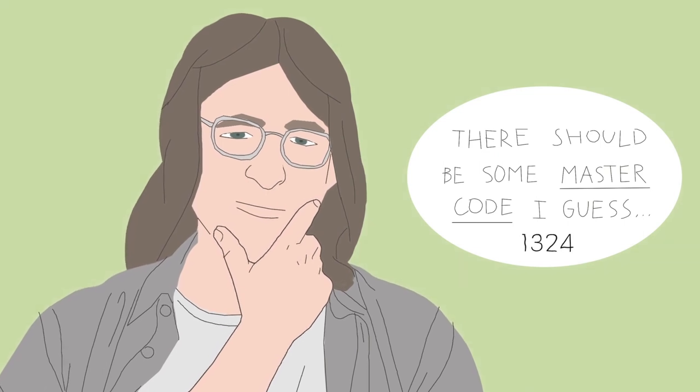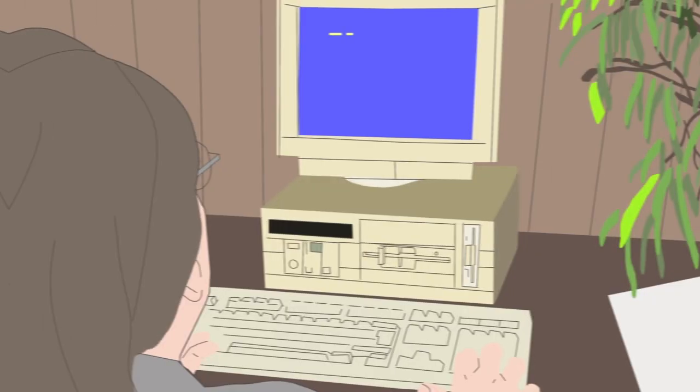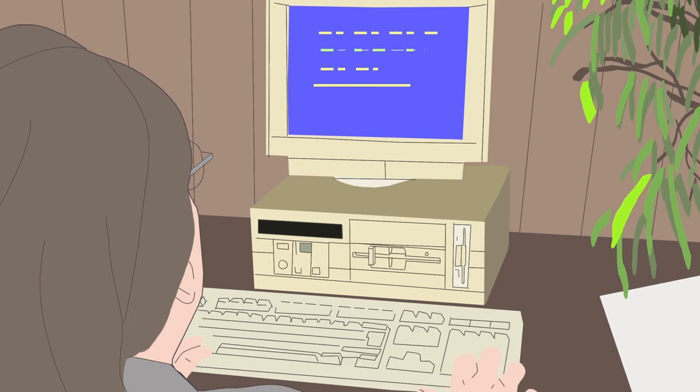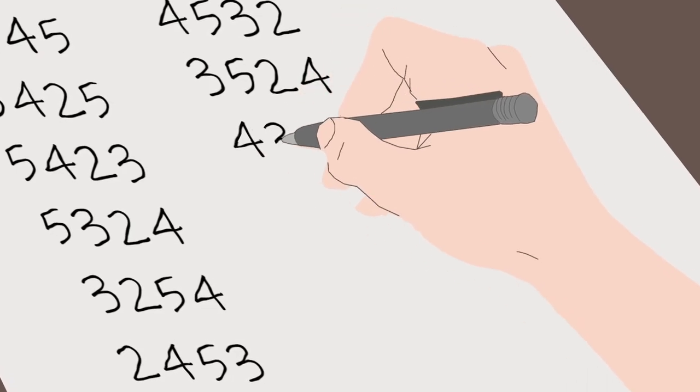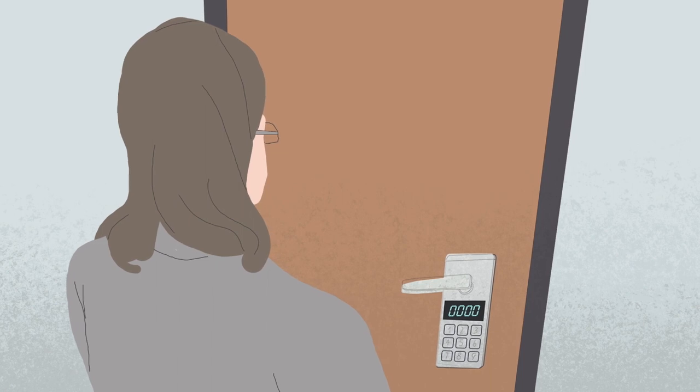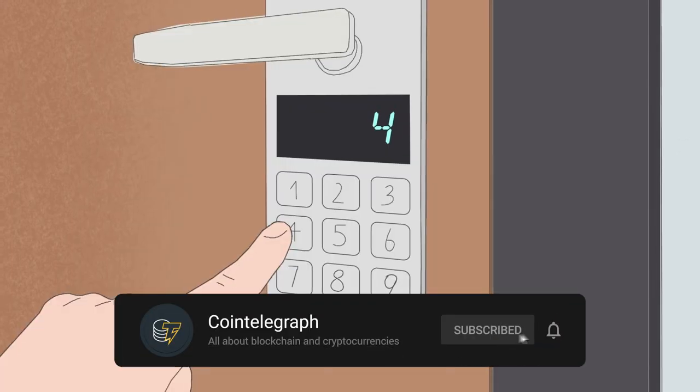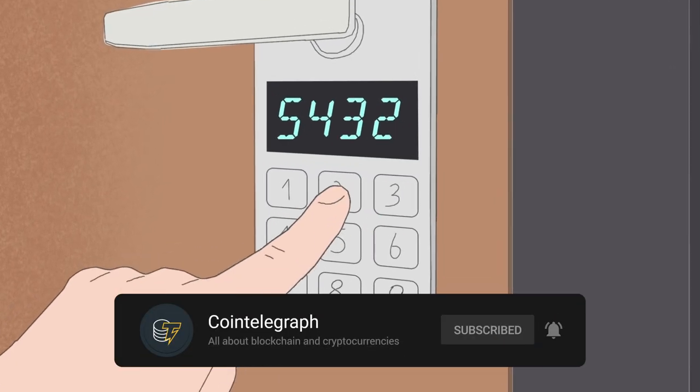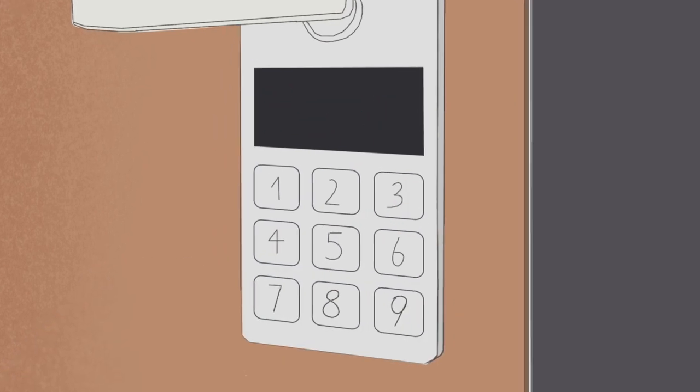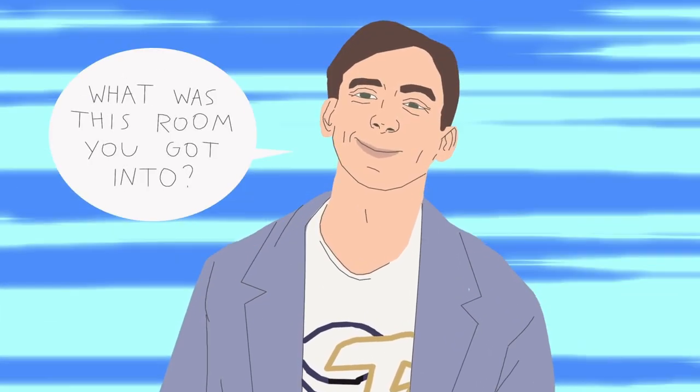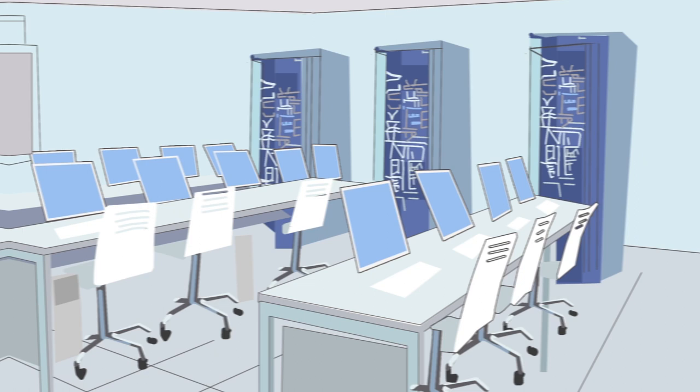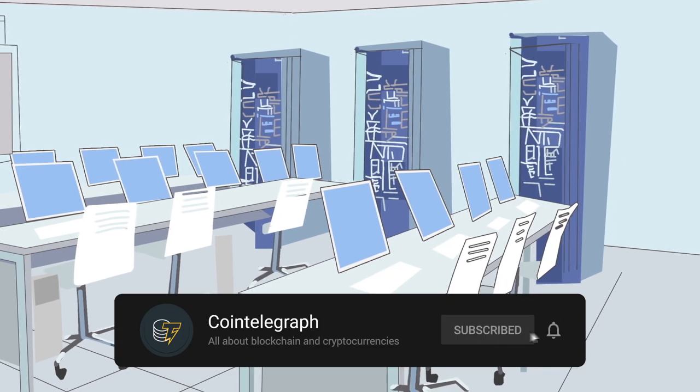It occurred to me there would be a kind of master code—a single long sequence that included all permutations of four digits. So I wrote some software to create this and print it out on a single sheet of paper, two-thirds of a sheet. I tested it on another door that I wasn't supposed to have access to, and it worked. I got into the room, which was a research lab with some parallel computers in it that was accessible to postdocs.